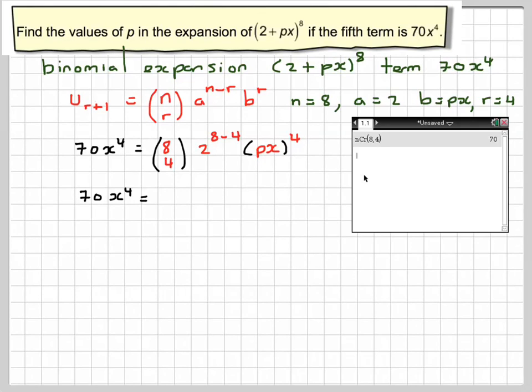So this is a screenshot of what I've just done. So we've got 70, 2 to the 8 minus 4 becomes 2 to the 4, p to the 4, x to the 4.